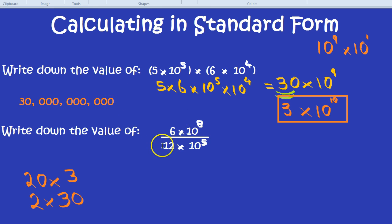Okay, a new calculation now. Again, using standard form. 6 times 10 to the power of 8, divided by 12 times 10 to the power of 5.